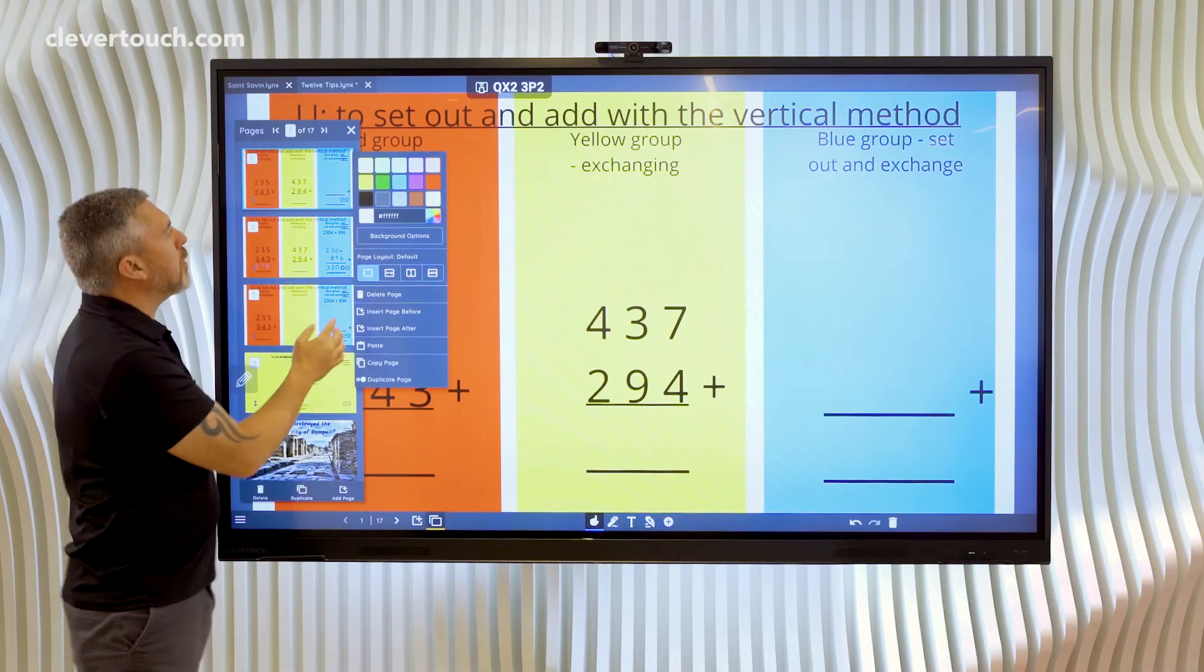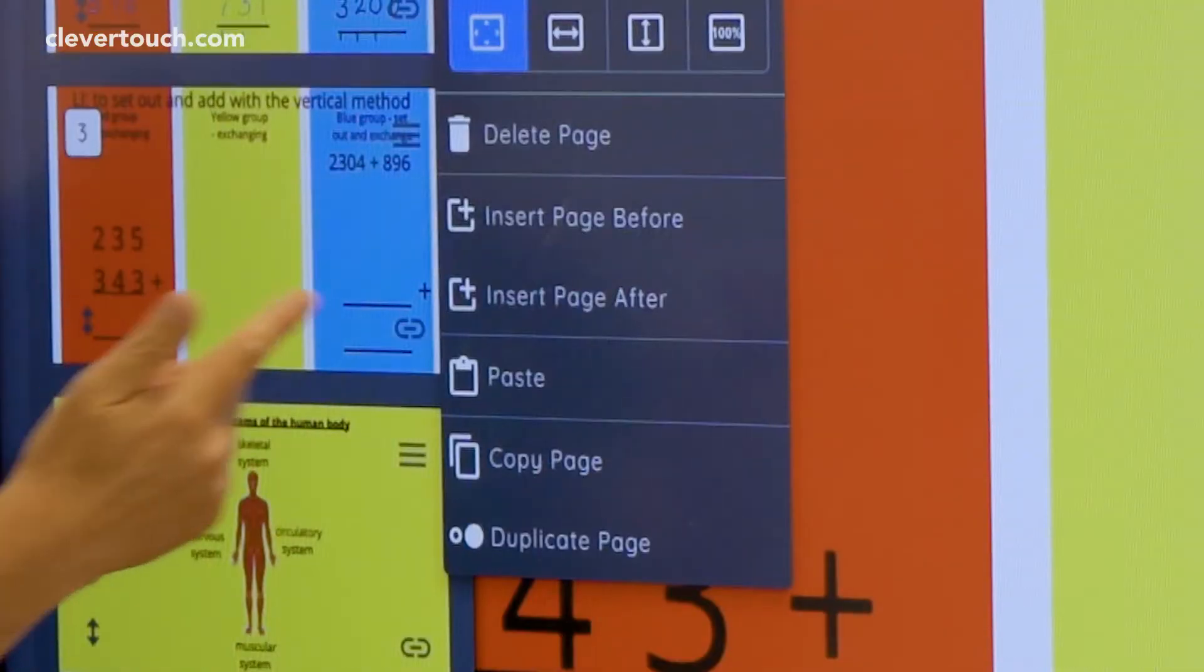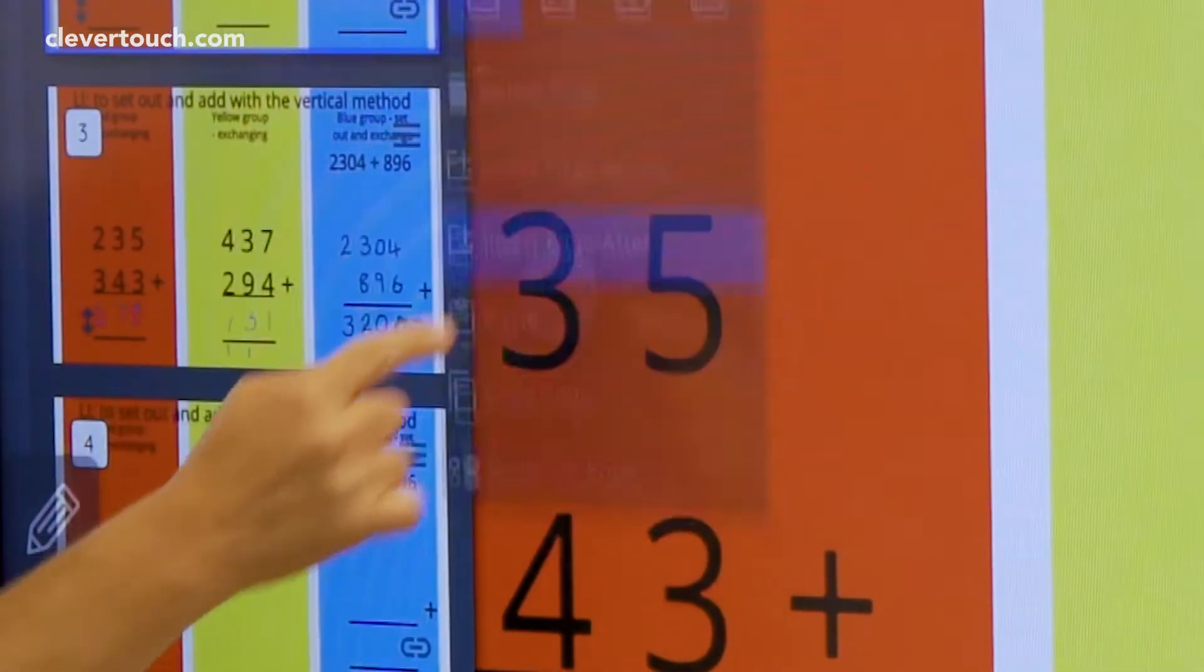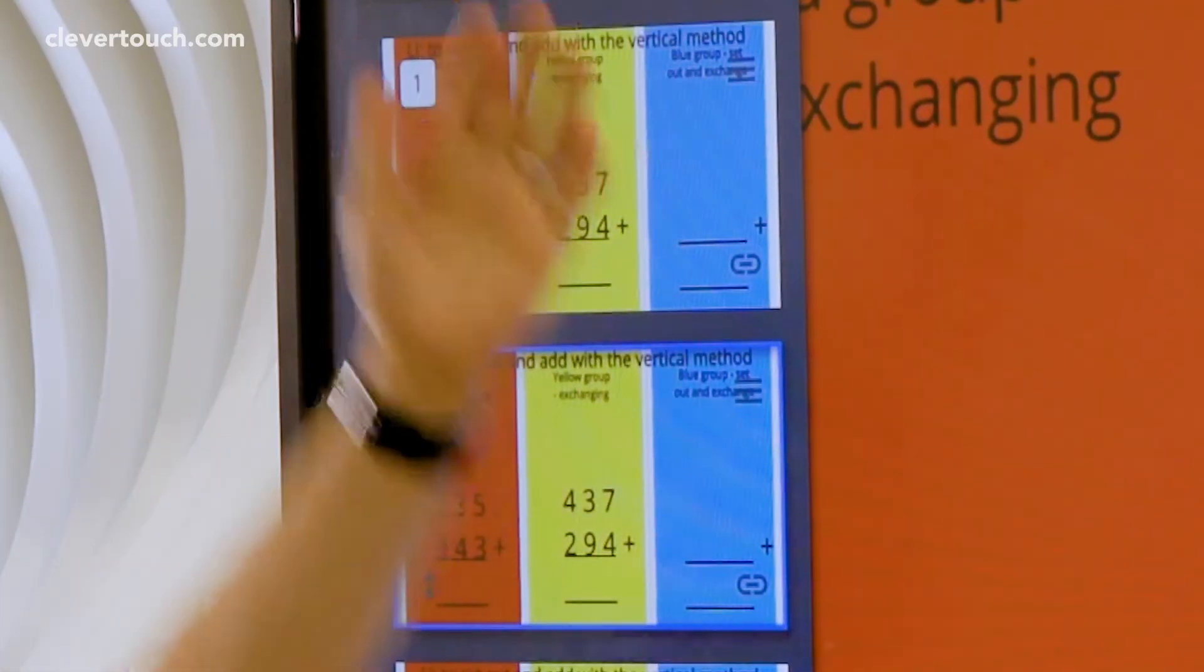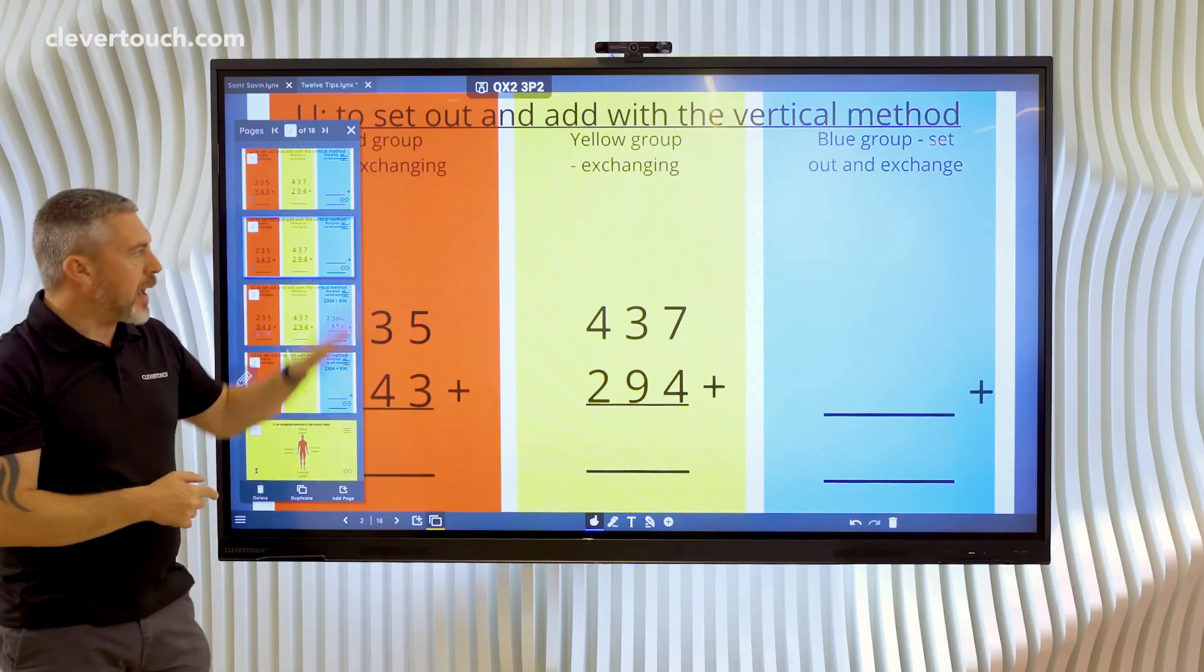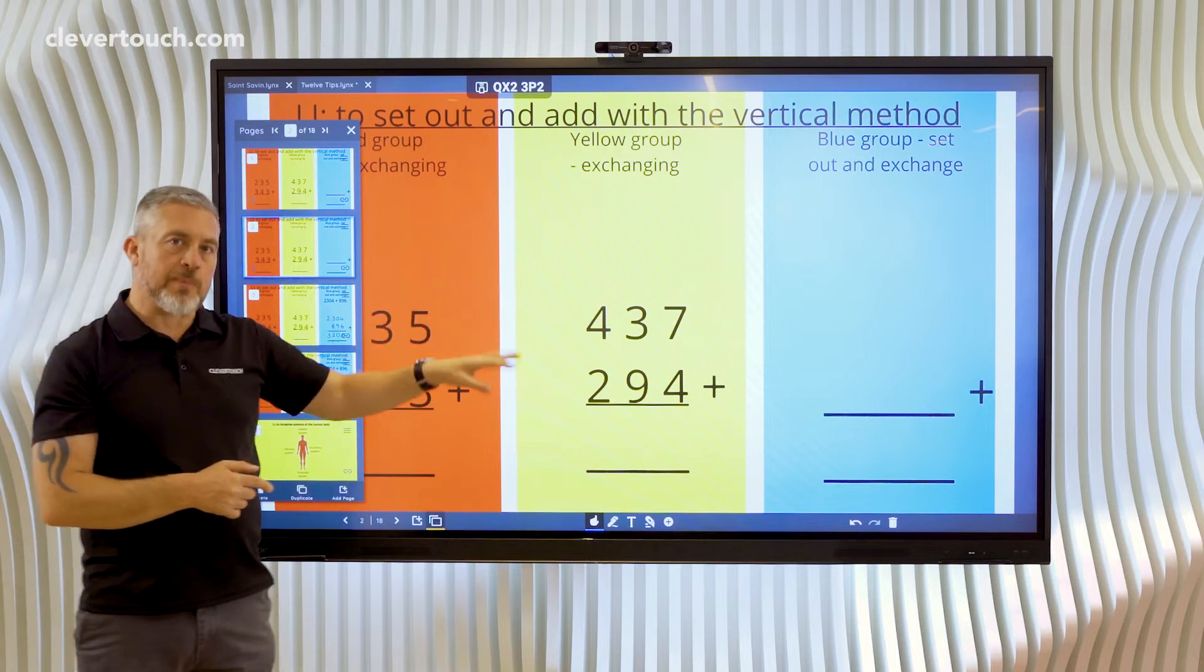So now if I decide that I want to insert a new page after the page I'm on, you'll see that this new page, there's my page one and here's now page two, they're exactly identical. And all of the equations are in the background again.